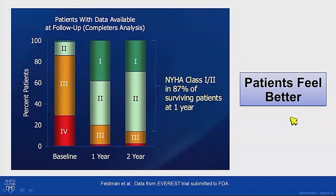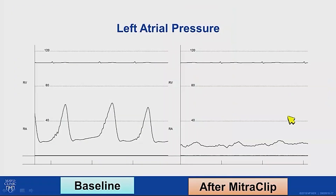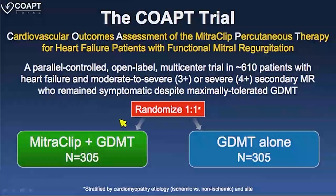In the EVEREST trial — the early trial of MitraClip with a mix of primary and secondary MR — over 90% of patients, 9 out of 10, felt better, whether they had surgery or the MitraClip. That's because their left atrial pressure — this is the regurgitant pressure — we can see a large V-wave on the left atrial pressure tracing disappear. We decrease the regurgitant pressure-loaded blood going back into the left atrium, relieving symptoms of shortness of breath. We'll see COAPT trial data about the additional effect on the ventricle going forward.